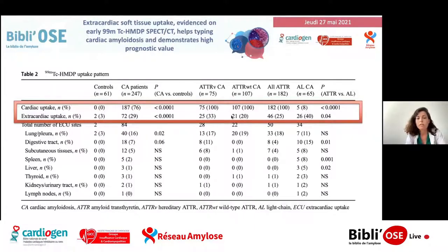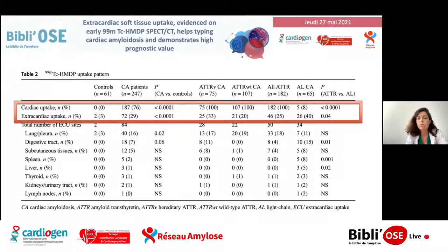La fixation extracardiaque, qui nous intéresse principalement, était beaucoup plus fréquente dans les amyloses AL, et principalement au niveau des fixations digestives, hépatiques ou spléniques. Il est important de noter que les fixations pulmonaires, par contre, étaient assez fréquentes, que ce soit dans l'amylose AL ou l'amylose à transthyrétine.